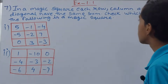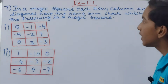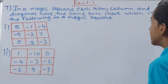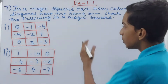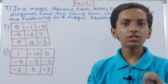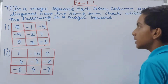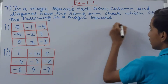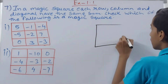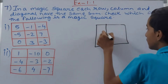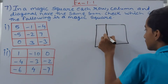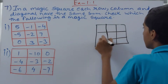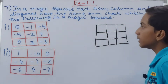This question says: in a magic square, each row, column, and diagonal have the same sum. Check which of the following is a magic square. Two squares are given and we have to check which is a magic square. First, let's understand what a magic square is. I'll draw a square here divided into a 3x3 grid.